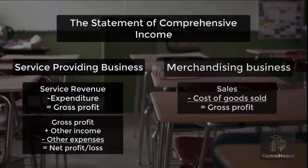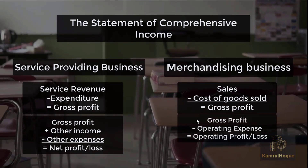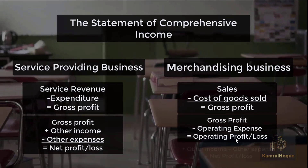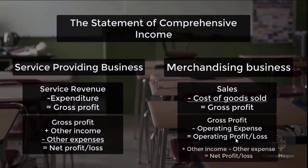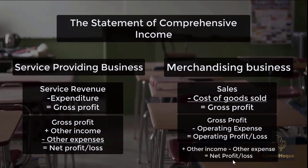For the merchandising business, the main revenue is from goods sold — sales are the main revenue. First, we have to minus the cost of goods sold, then we arrive at gross profit. From the gross profit, we minus the operating expenses — the expenses required to run the business — and then we get the net profit and loss. So for the merchandising business, we add other income and minus expenses to arrive at net profit and net loss.